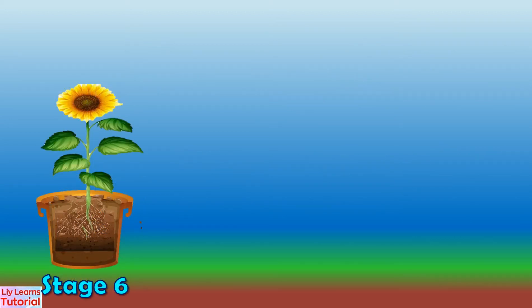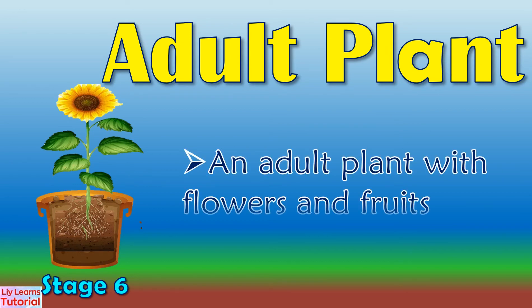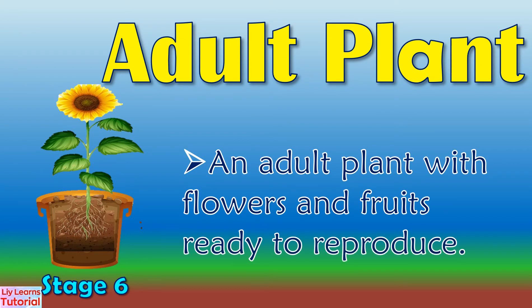Stage 6: Adult. Soon it becomes an adult plant, with flowers and fruits ready to reproduce.